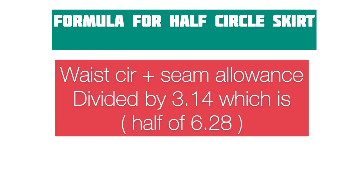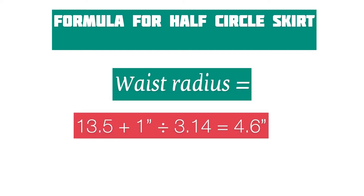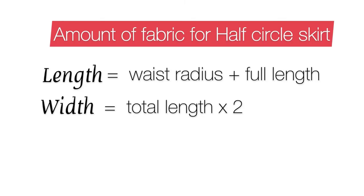When drafting directly on the fabric, the formula for the half circle skirt is: your waist circumference plus your seam allowance, divided by 3.14, which is half of 6.28. For me this gives 4.6 inches.